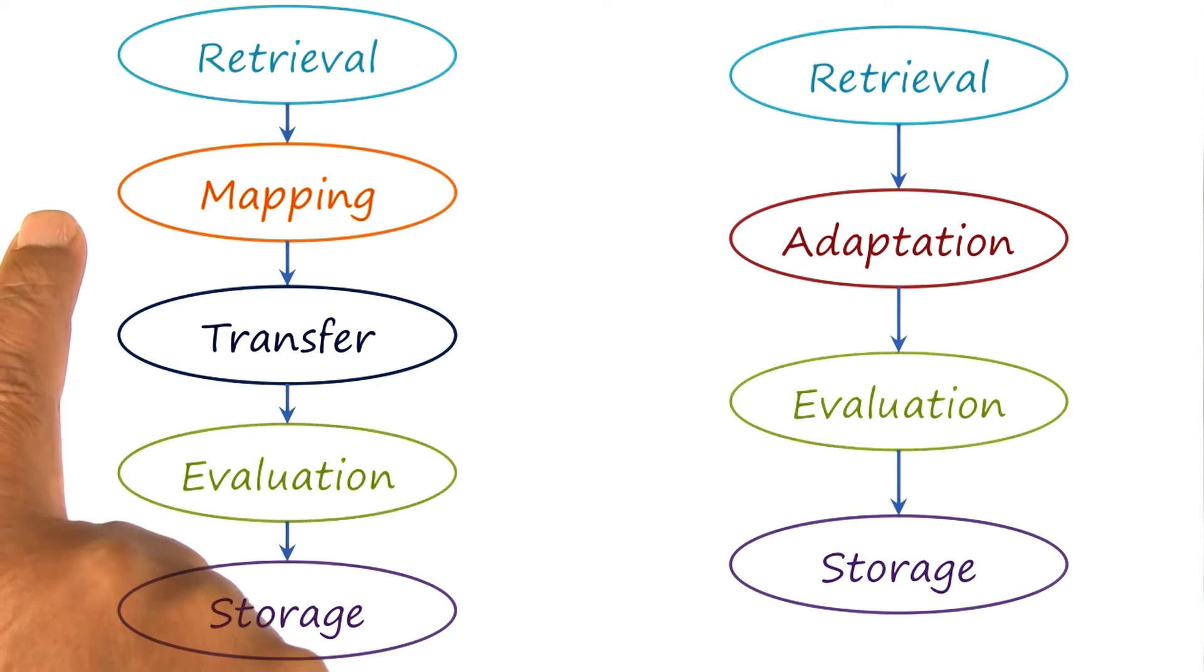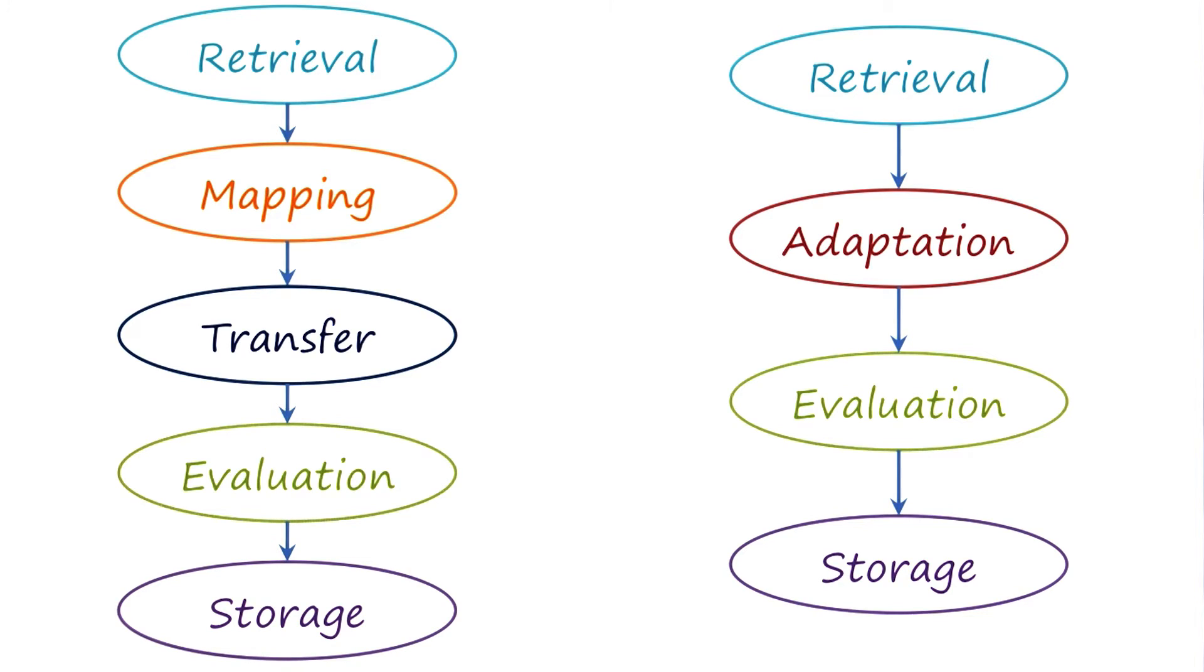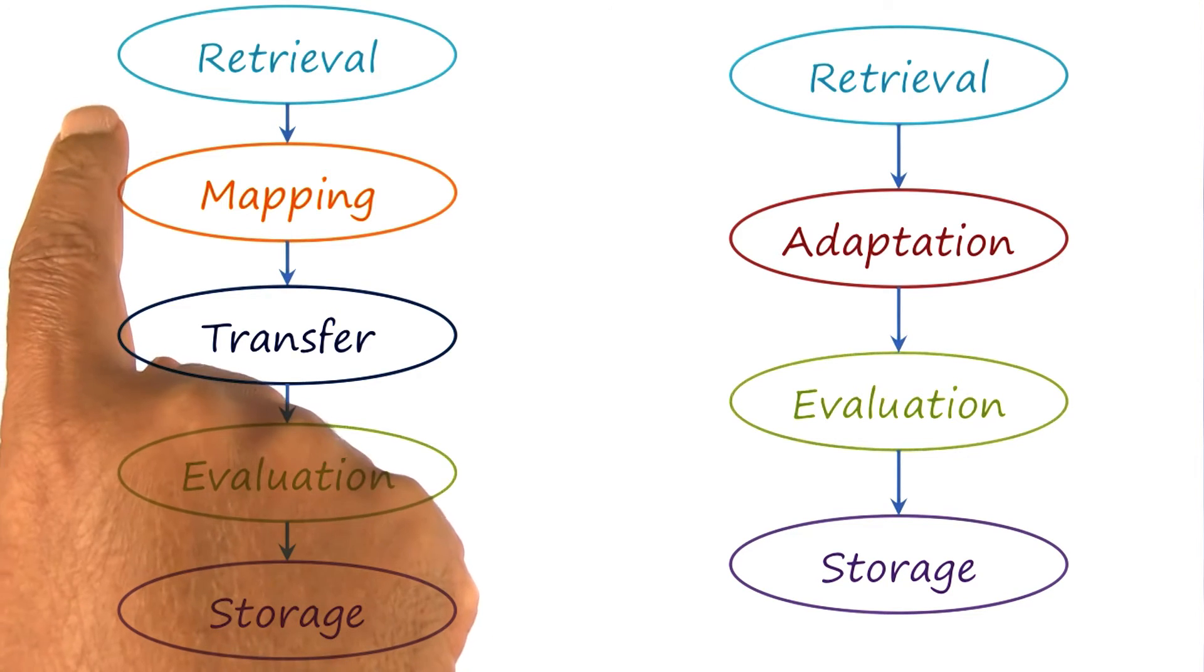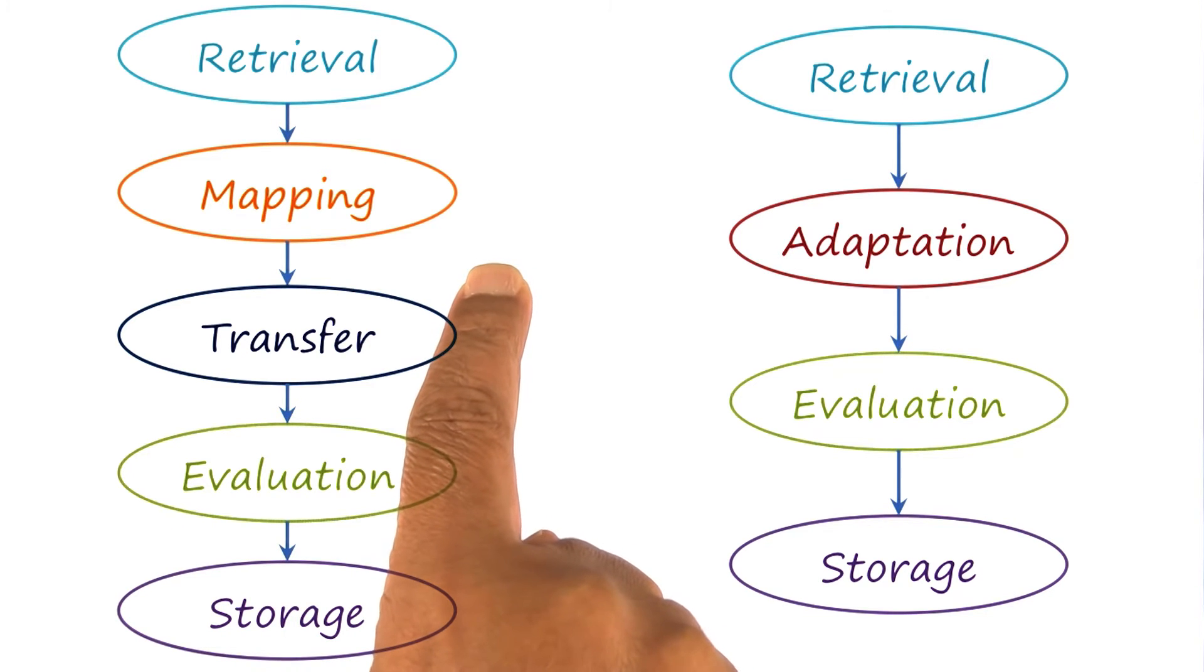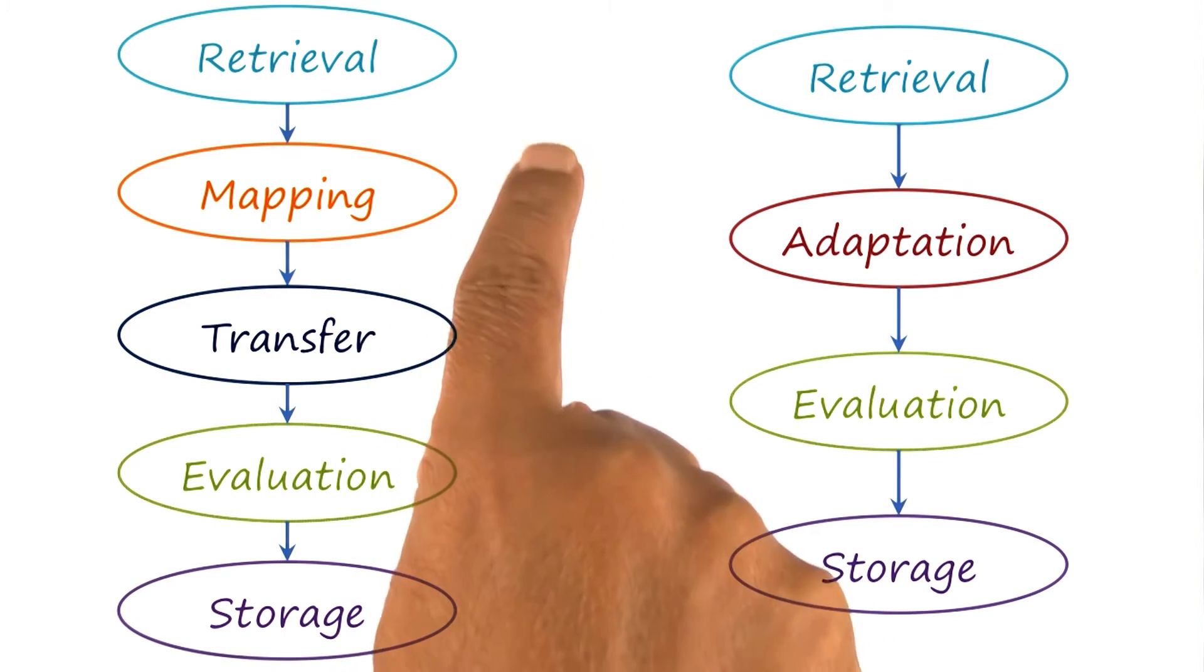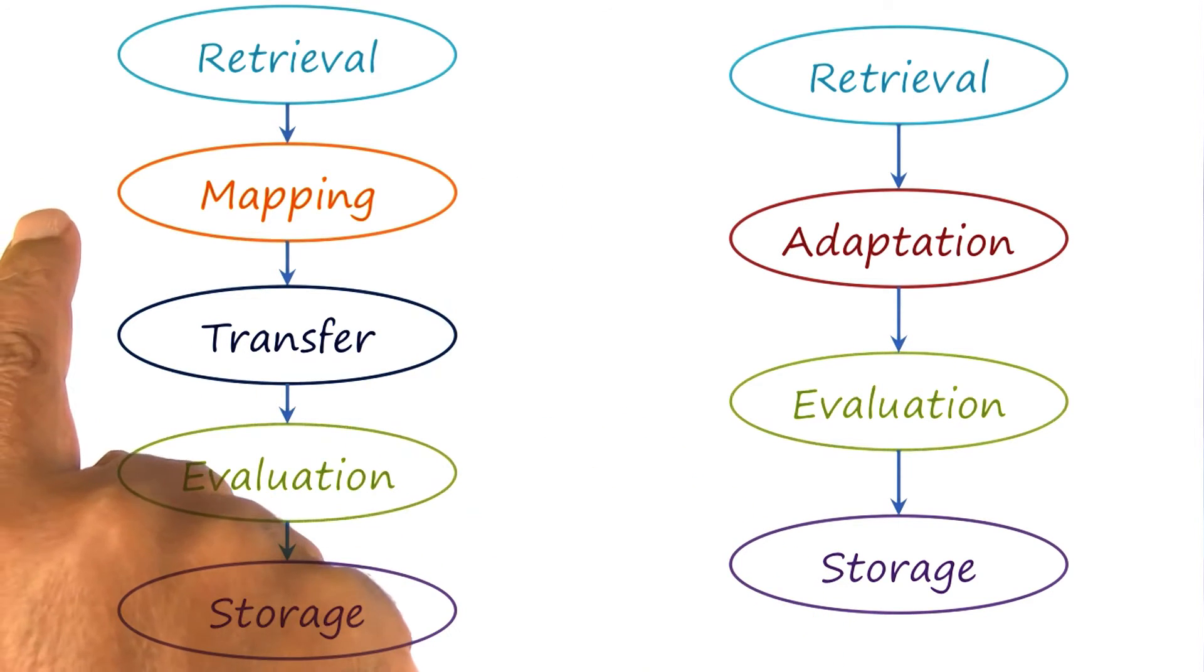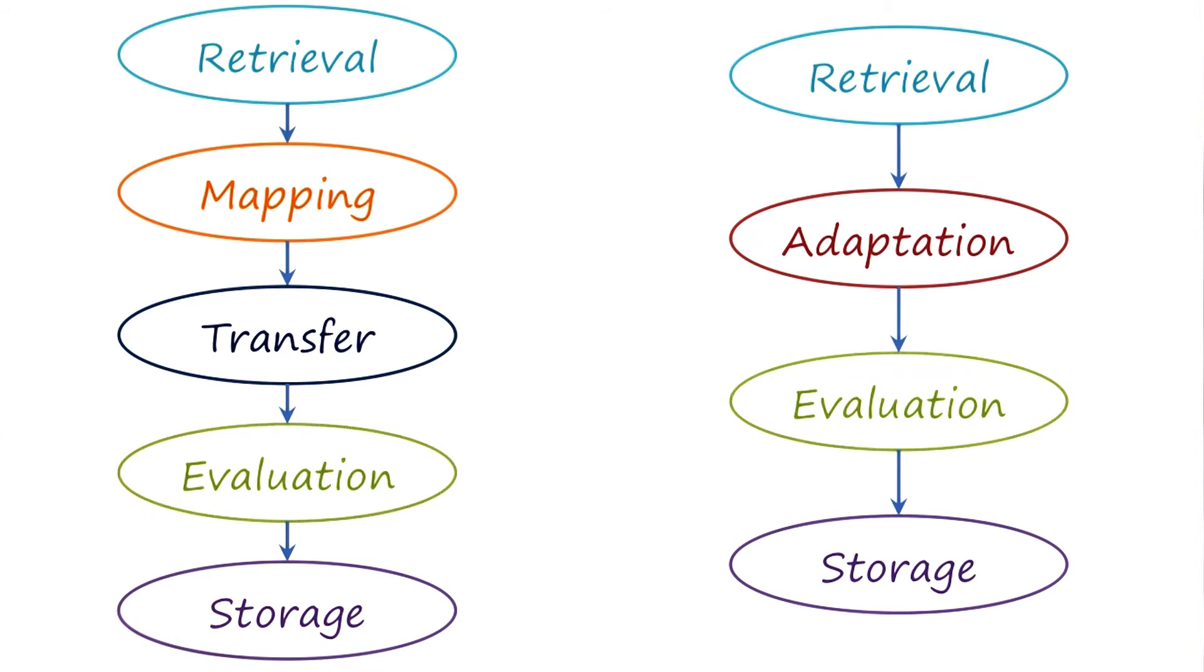We first have to map the target problem and the source case. That is, we need to address the correspondence problem. What in the target problem corresponds to what in the source case? As an example, the laser beam in the target Dunker radiation problem corresponds to the rebel army in the source case. Once we have mapped the concepts and relationships in the target problem to the concepts and relationships in the source case, then we can try to transfer some of the relationships in the source case to the target problem. We can first abstract those relationships and then transfer them to the target problem.